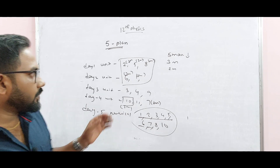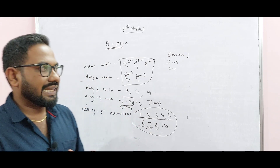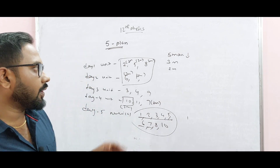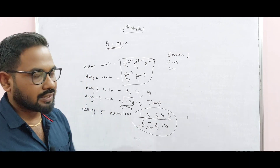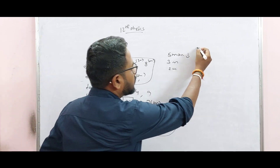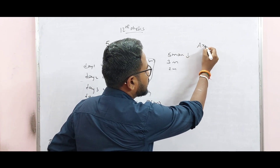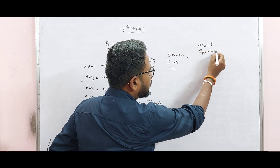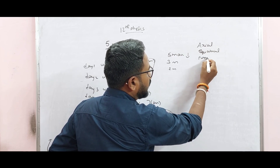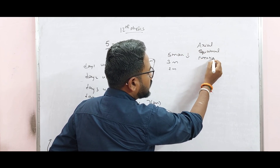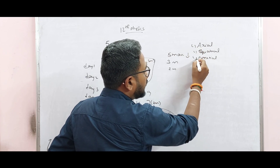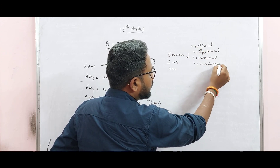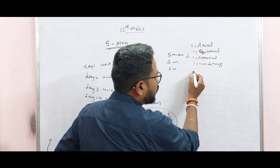Basically, this is the original plan. What is important to tell you? I am going to tell you the important topics. Let's start. Axial Line, Equatorial Line, Potential Due to Dipole — Unit 1. Van de Graaff Generator — Unit 2.